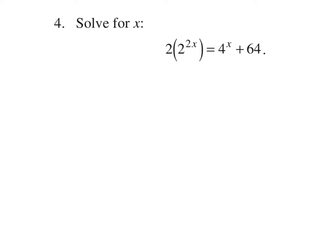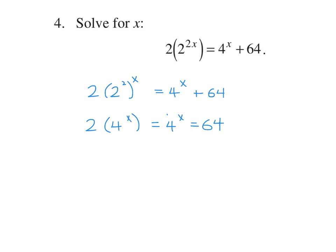Solve for x: 2 times 2 to the power of 2x is equal to 4 to the power of x plus 64. We can rewrite 2 times 2 to the power of 2x as 2 times 4 to the power of x. This gives us 2 times 4 to the power of x equals 4 to the power of x plus 64. Bringing one term over: one of these gives us 4 to the power of x equals 64. Since 64 is 4 to the power of 3, and the bases are the same, the exponents are equal, therefore x equals 3.